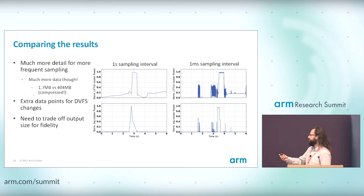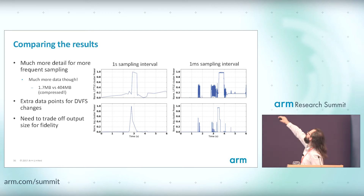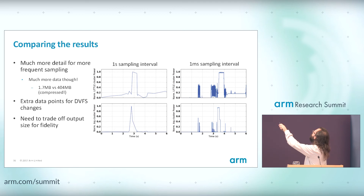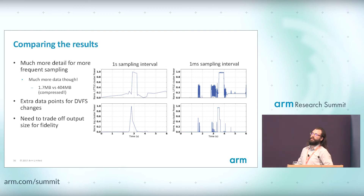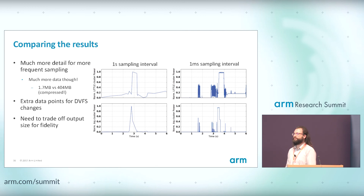We run two workloads: dhrystone on six threads, which runs across all cores — a very CPU-intensive application running for about half a second — and then memcopy on a single little core. You can see this reflected in the output powers: here is where dhrystone runs on the little cores and big cores, and here you can see memcopy running on the little cores. The main trade-off is output file size: the right-hand side was about 400 megabytes compressed — roughly 4 gigabytes uncompressed — whereas the left-hand side was only 1.7 megabytes. So you trade off output fidelity for file size.